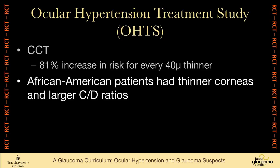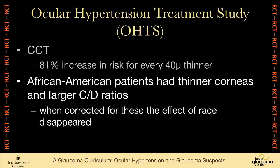African American patients on average had thinner corneas and larger cup-to-disc ratios. And when we correct for corneal thickness and cup-to-disc ratio, race itself disappeared as a risk factor. So race was a risk factor in that people of African heritage were more likely to have thin corneas and more likely to have baseline larger cup-to-disc ratios.